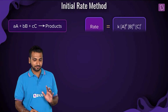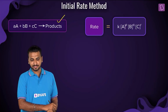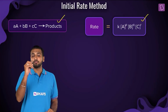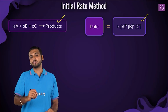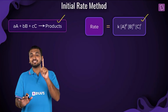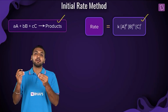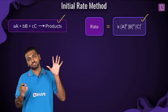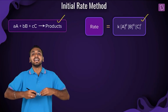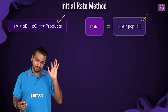Mathematically, for the reaction A, B, C reacting to form products, the rate law is written as: Rate = K · [A]^P · [B]^Q · [C]^R. A, B, C are the stoichiometric coefficients, while P, Q, and R are the individual orders of reaction with respect to A, B, and C respectively, and may or may not be related to the stoichiometric coefficients.